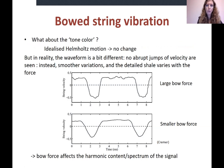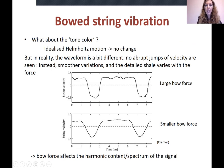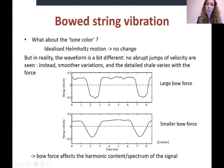What about tone color? With the idealized Helmholtz motion there is no change, but we're in the real world. The waveform is actually quite different — no abrupt velocity jumps, but smoother variations, and the detailed shape varies with force. With a large bow force it gets close to the idealized sharp form, whereas with a smaller bow force it's much more rounded. The sharper the waveform, the more high-frequency content in the spectrum. Applying more force gives a richer sound with higher harmonics.